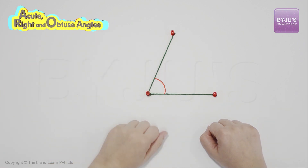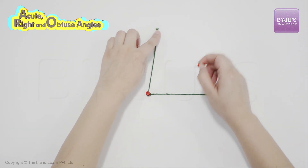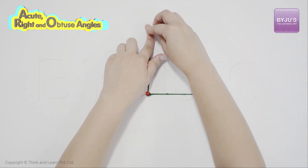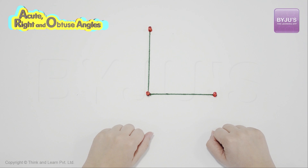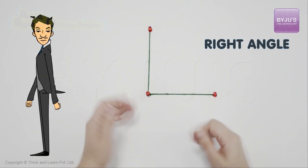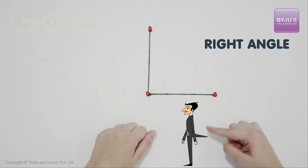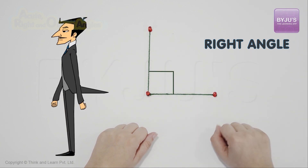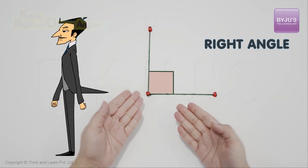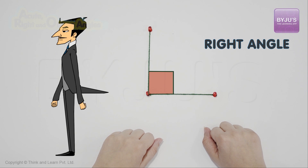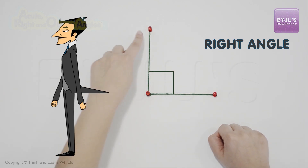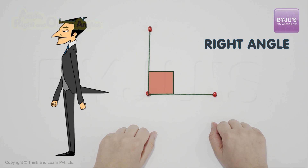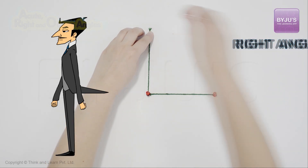Now this line moves all the way up till it stands up straight. That's special when it stands up straight, so we call the angle made a right angle — right because it's upright. And because it's special, we'll use a little square to show it, like this. So this little square between two lines means that this is a right angle.